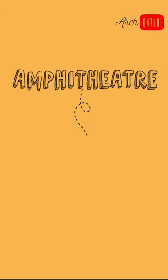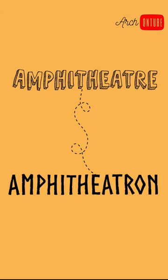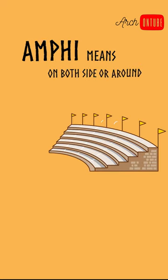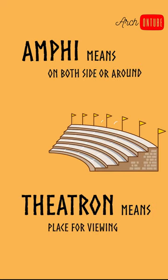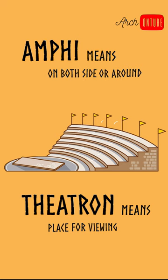The term Amphitheatre derives from the ancient Greek word 'Amphitheatreon.' 'Amphi' means on both sides or around, and 'teatreon' means place for viewing.